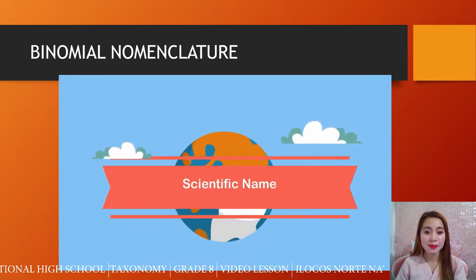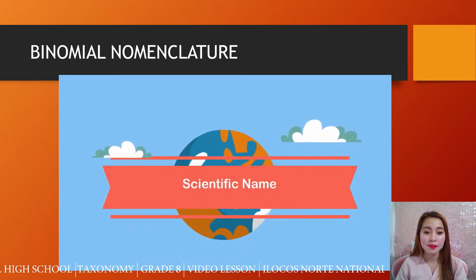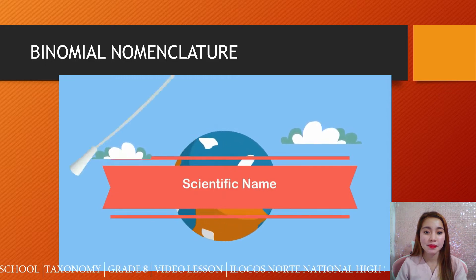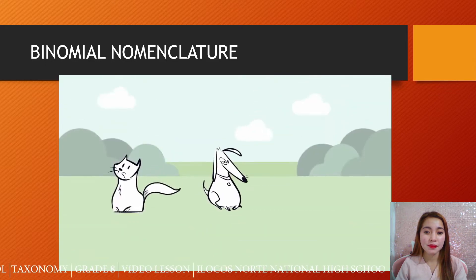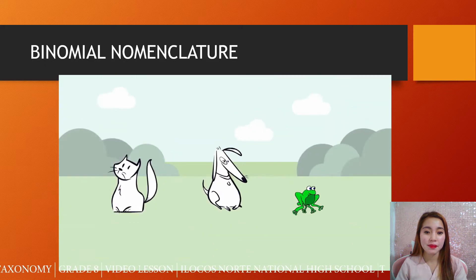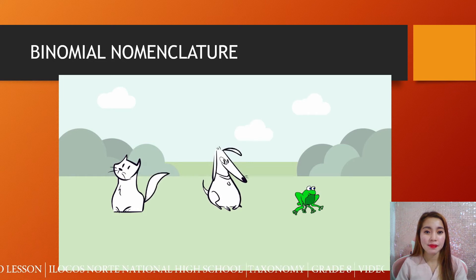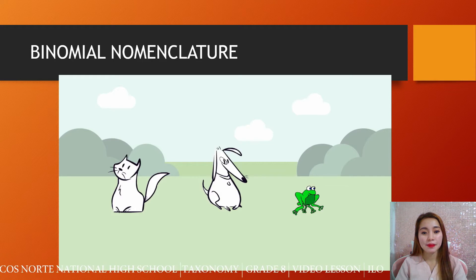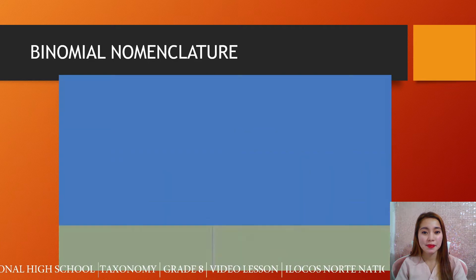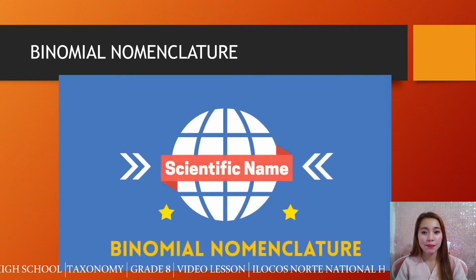In this video, I'd like to talk about scientific names, also called binomial nomenclature. If you were to name these animals, you could use the words cat, dog, or frog. If you lived in Germany, you would use different words. In order to avoid confusion, animals and plants are identified with a scientific name. This system is called binomial nomenclature.